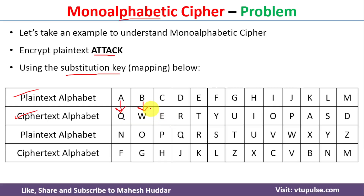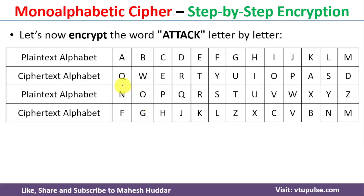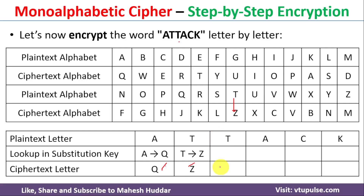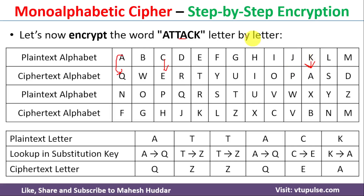Now we find the encrypted message for 'ATTACK'. The first letter 'A' is replaced by 'Q'. Next, 'T' is replaced by 'Z', and the second 'T' is also replaced by 'Z'. Then 'A' is again replaced by 'Q', 'C' is replaced by 'E', and 'K' is replaced by 'A'. So the encrypted message for 'ATTACK' is 'Q Z Z Q E A'.